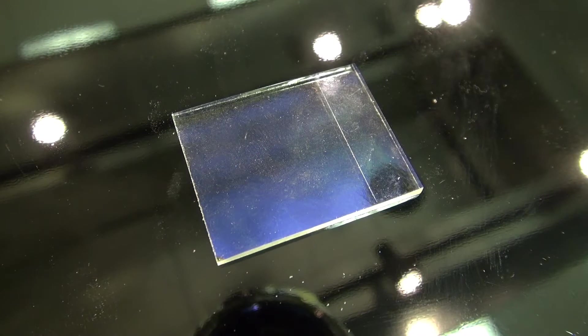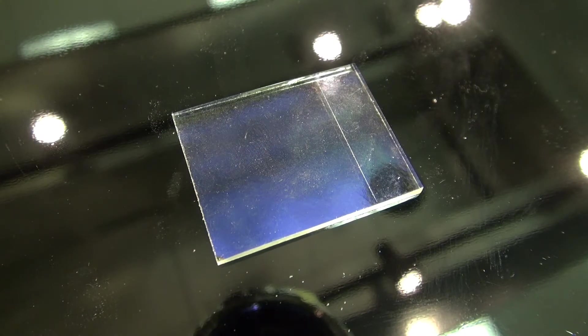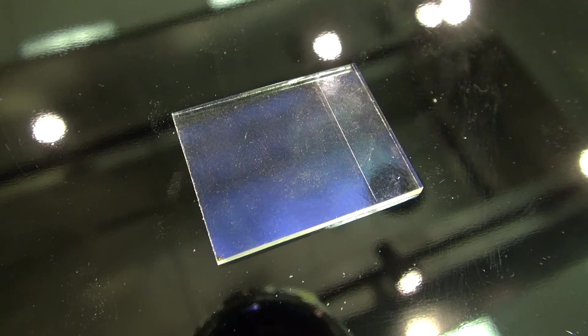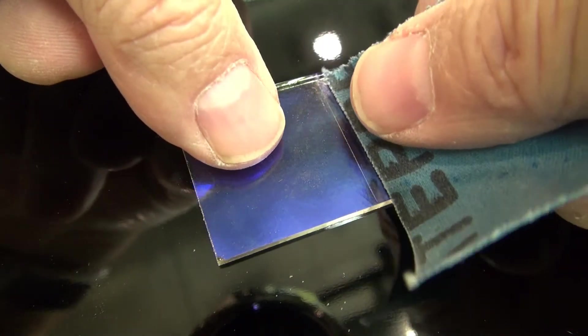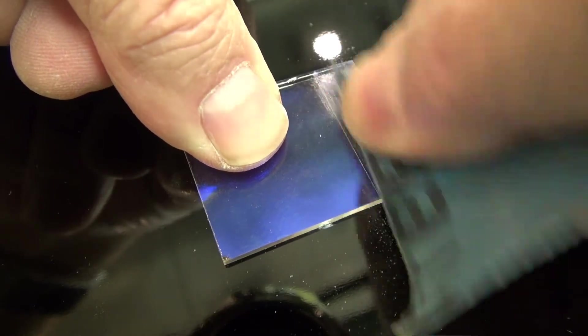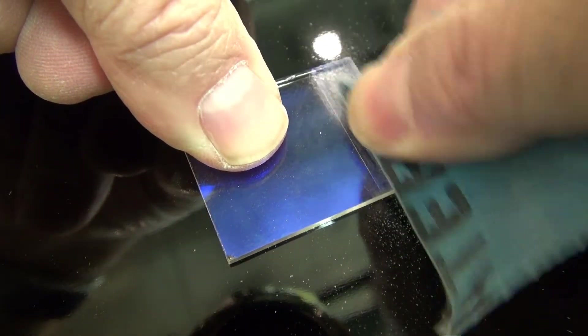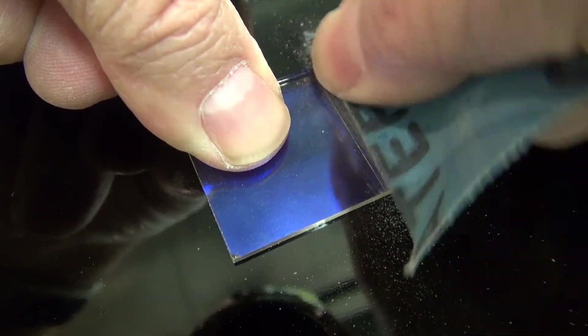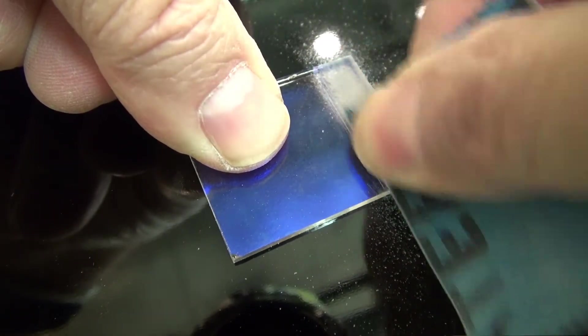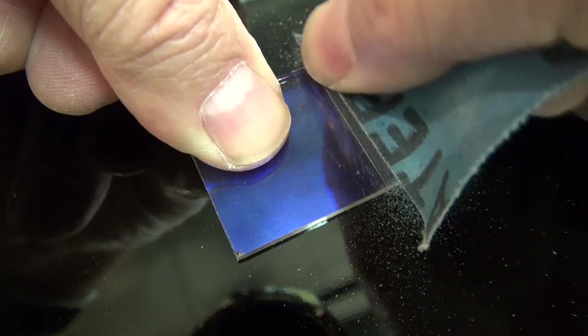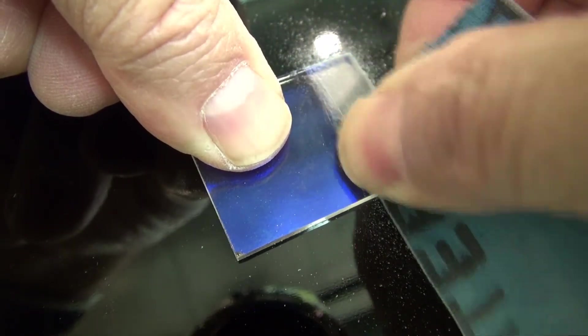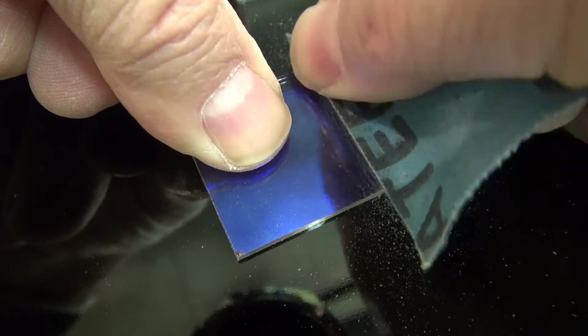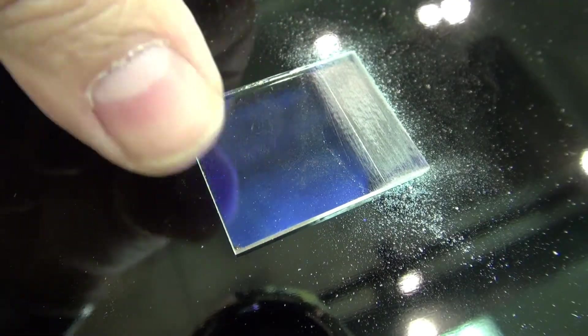If the piece you want to test has dichroic coating on it, you'll need to remove the dichroic. You can sand it off or etch it off, whatever works. Here I'm going to use some sandpaper and sand the coating off. The coating would otherwise interfere with the test.